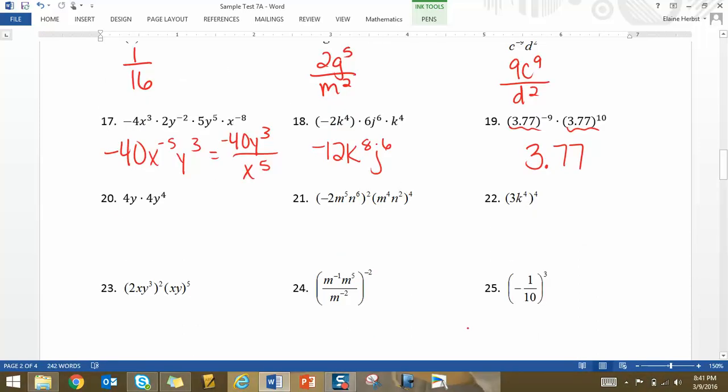For number 20, we get 16y to the fifth. 21. Square the negative 2 and you get 4. And then I'm going to do these simultaneously. This would be m to the tenth and m to the sixteenth. So that's m to the twenty-sixth. N to the twelfth and n to the eighth. So that's n to the twentieth.